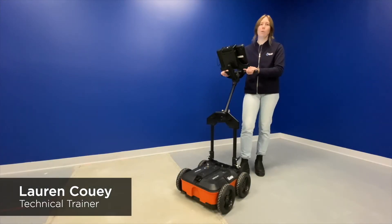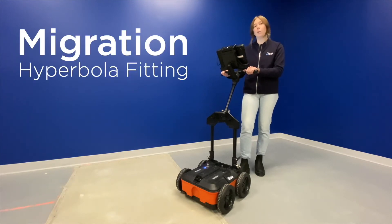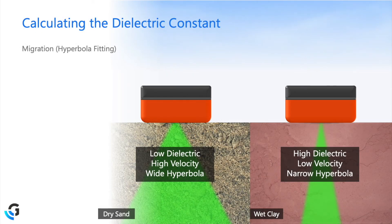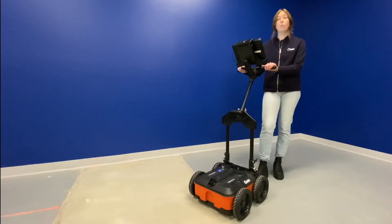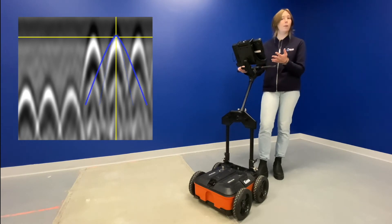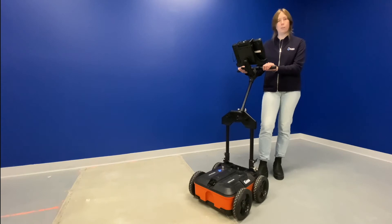In this video, we're going to review how to calibrate your utility scan system accurately for depth, and to do so we're going to use a method called migration or hyperbola fitting. Migration is based off of the theory that the width of hyperbolas is related to our dielectric constant. So we are going to use our hyperbola fitting tool to fit to a hyperbola that actually appears in our data, and by doing so, we will be able to determine the correct dielectric value, which will then calibrate our system for depth.